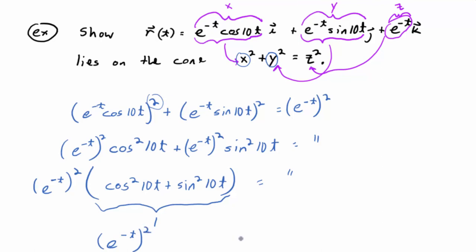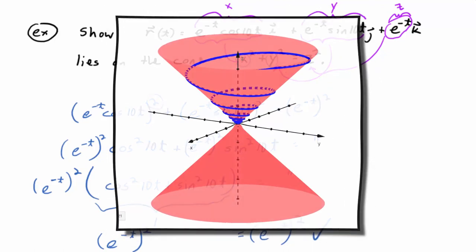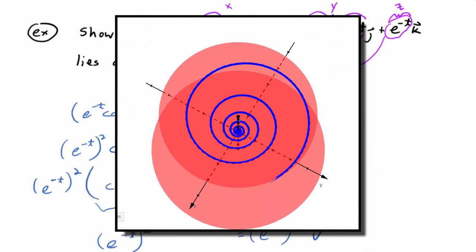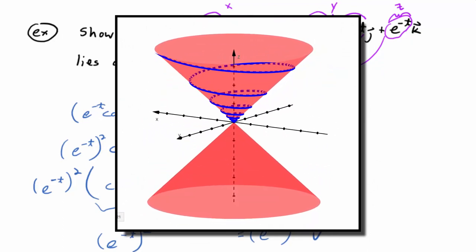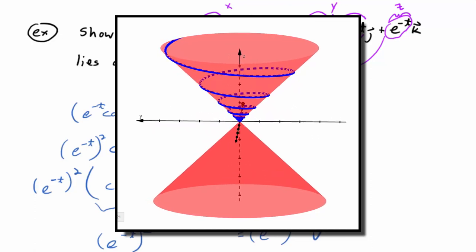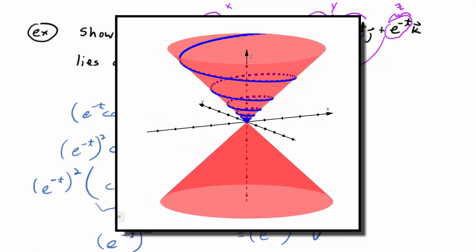And we're just left with e to the negative t squared equals, on the right side, e to the negative t squared. We got a true statement. We just verified that this set of points represented by R of t is a solution set to the cone x squared plus y squared equals z squared. In other words, that curve that it represents lies on the cone. And so here's a picture of what that looks like. Notice how the graph in blue, which is the graph of R of t, notice how that curve lies completely on the top part of that cone.